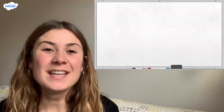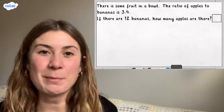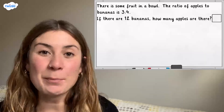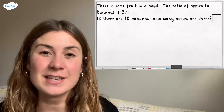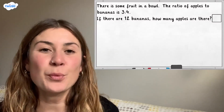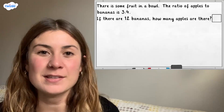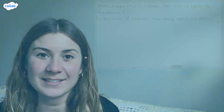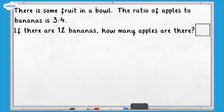Now it's time for a challenge. There is some fruit in a bowl. The ratio of apples to bananas is three to four. If there are 12 bananas, how many apples are there? Pause here and have a go at solving this problem. If you're stuck, unpause for a visual clue.